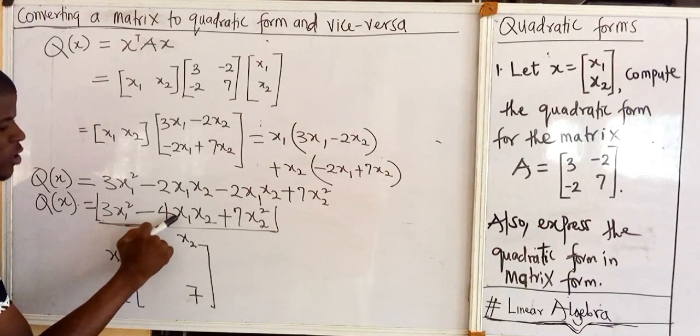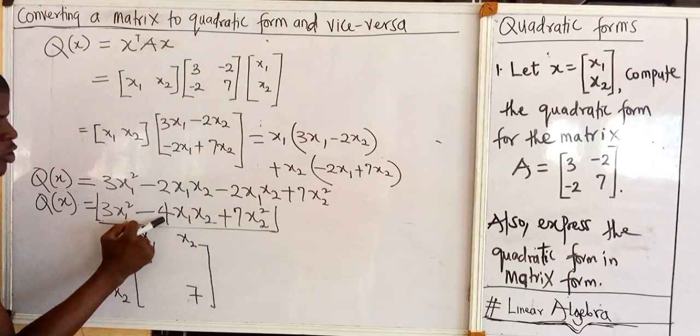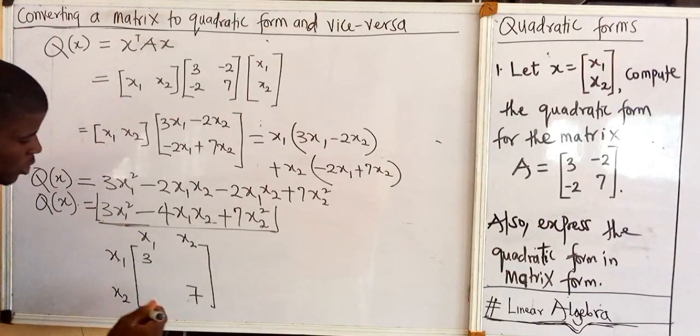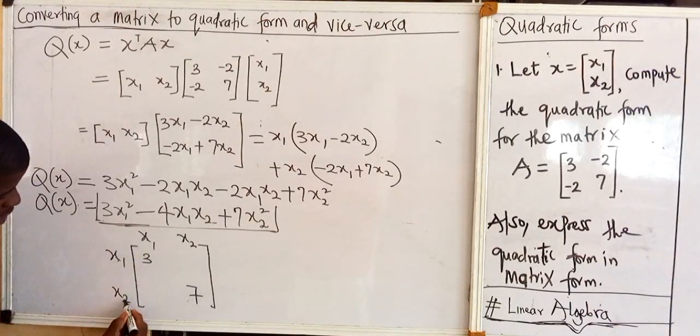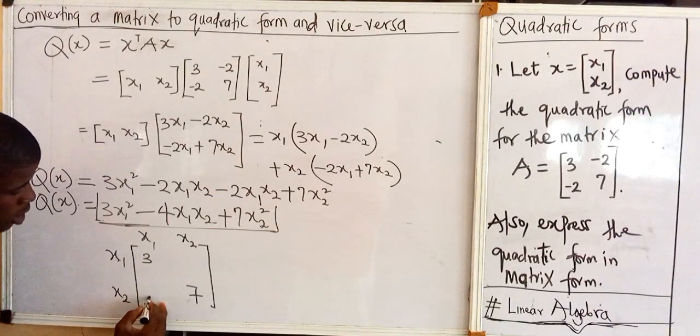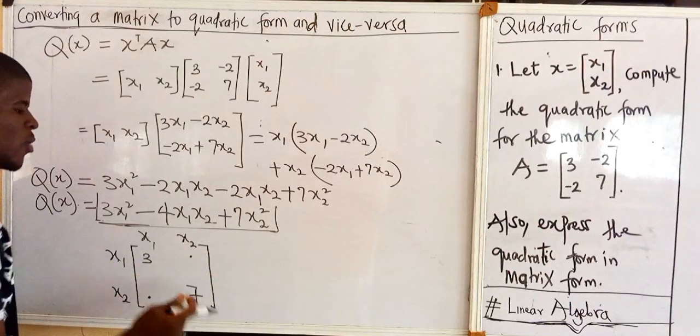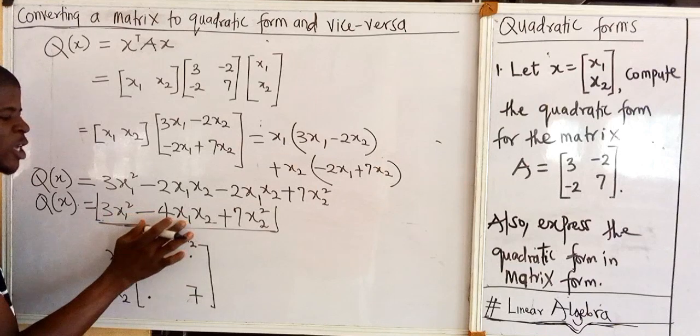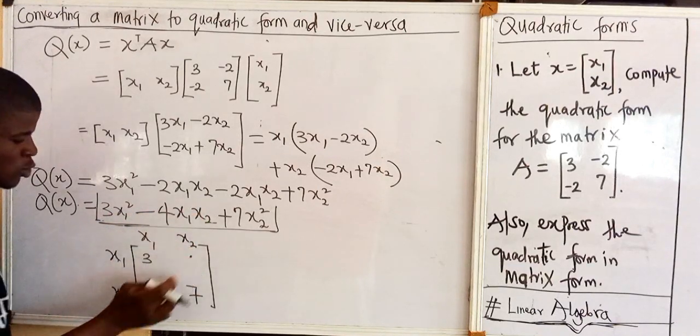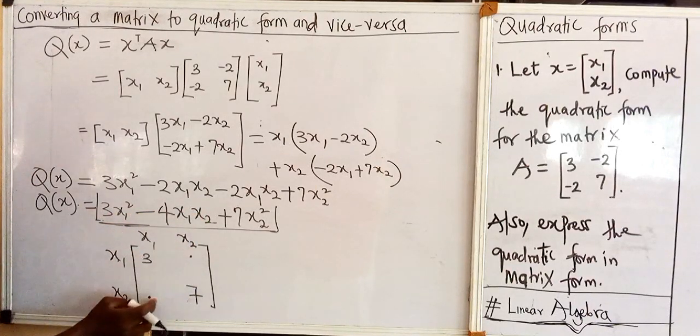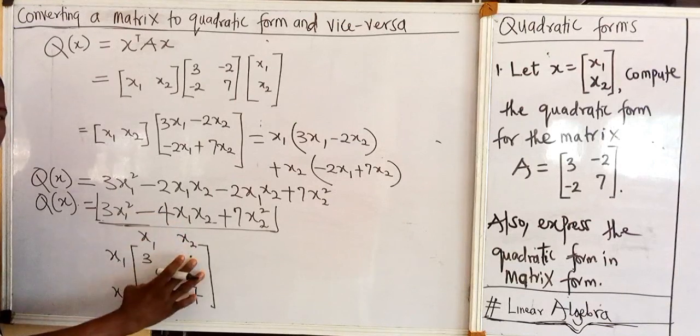The coefficient of x1x2 here is minus 4, and we know that x1 times x2 is x1x2 and also x2 times x1 is x1x2. Now we have just one coefficient for x1x2 but we have two points where these values will be fixed. So what do we do?